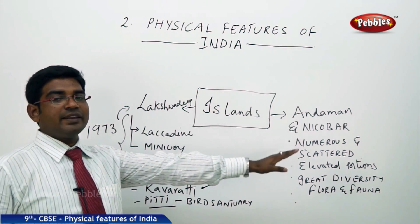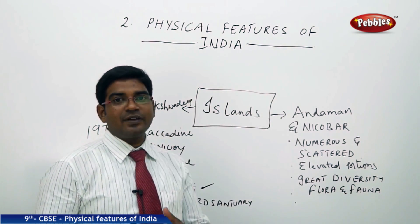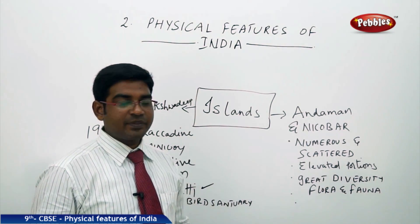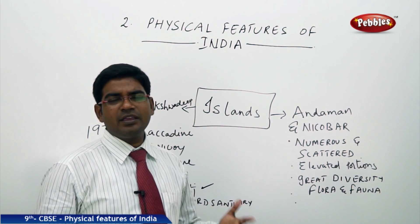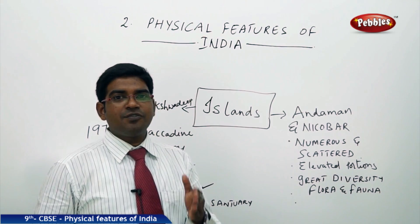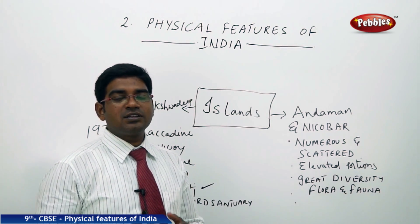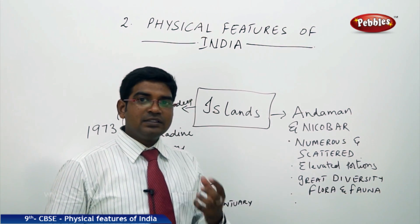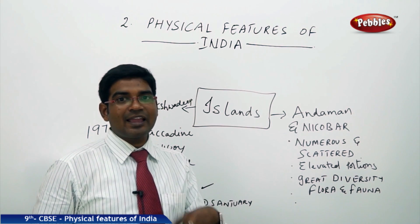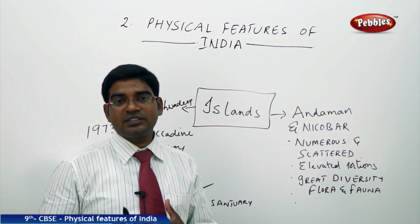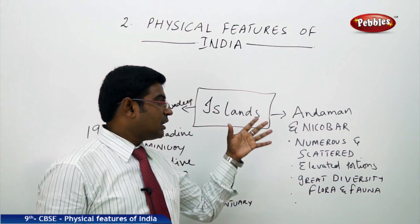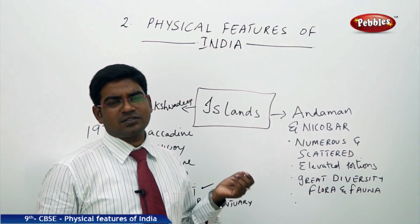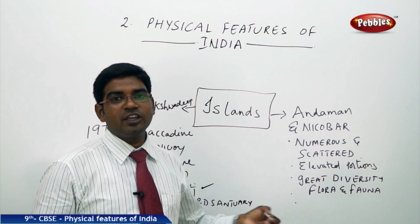Moving on to the eastern side, in the Bay of Bengal, we have the Andaman and Nicobar Islands. There are approximately 250 to 260 islands scattered along the eastern coast of India. These islands are elevated portions formed by volcanic activity, and they have great diversity in flora and fauna. The region is completely equatorial and covered with thick forest.